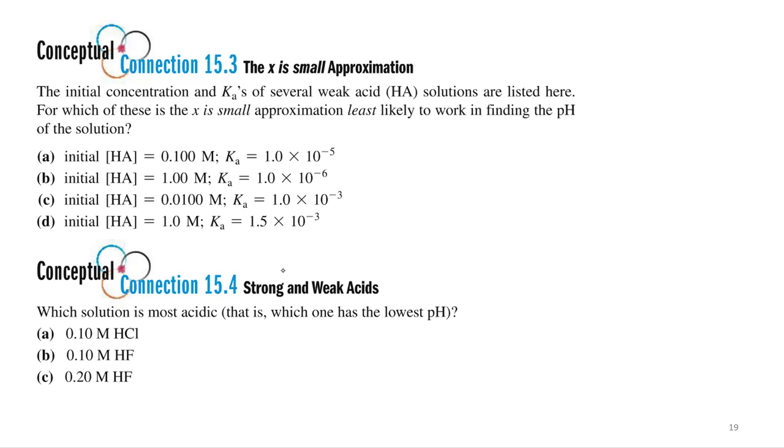We'll vote to see which one do we think is the least likely. So we got initial HA of 0.1, Ka 1.0 times 10 negative 5th. 1 molar, 1.0 times 10 negative 6. 0.01 molar, 1.0 times 10 negative 3. And 1.0, 1.5 times 10 negative 3rd.